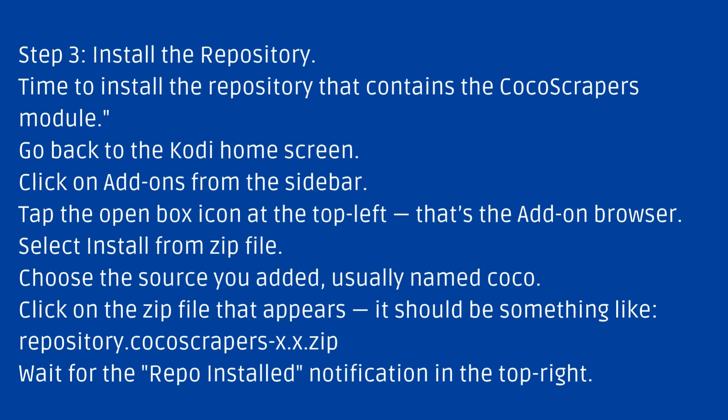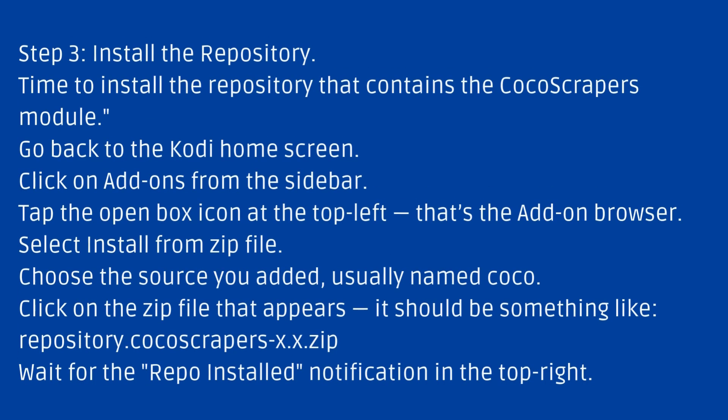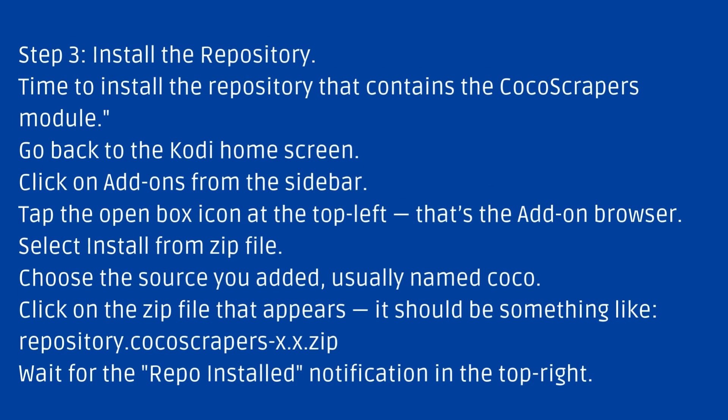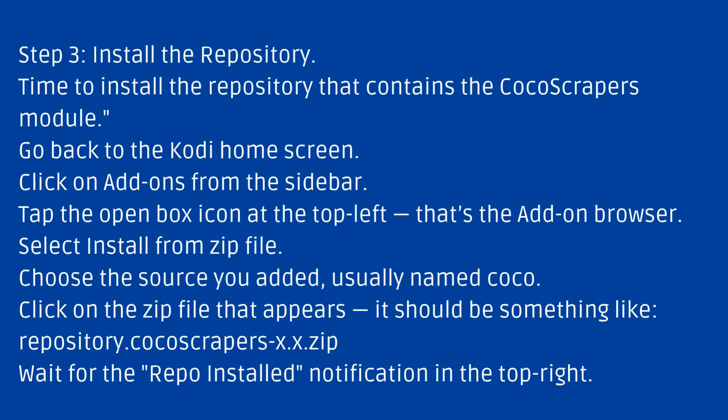Step 3: Install the Repository. Time to install the repository that contains the Cocoa Scrapers module. Go back to the Kodi home screen. Click on Add-ons from the sidebar. Tap the open box icon at the top left — that's the Add-on browser. Select Install from Zip File. Choose the source you added, usually named Cocoa. Click on the zip file that appears — it should be something like Repository.CocoscrapersX.x.zip. Wait for the Repo Installed notification in the top right.